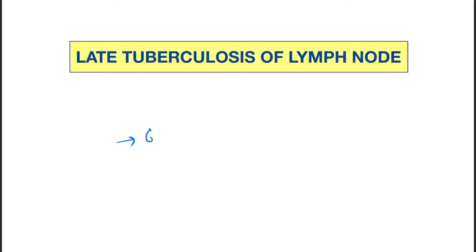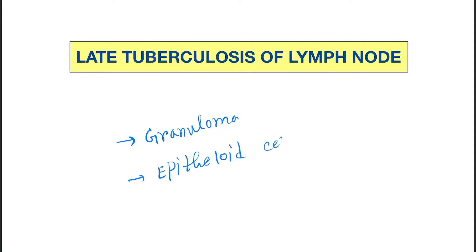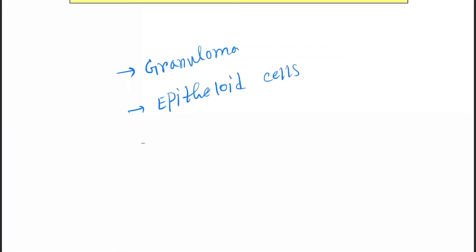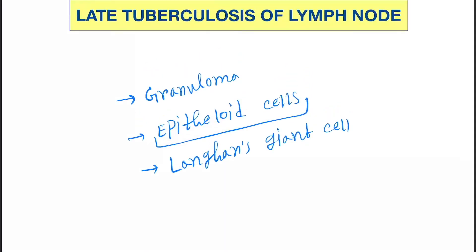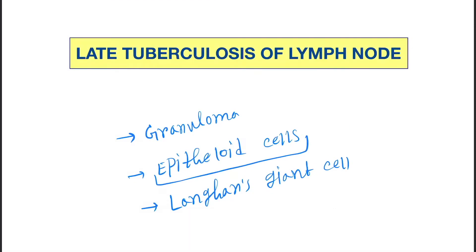In the case of early tuberculosis, there were 3 characteristics: first is the granuloma, next are the epithelioid cells, and multiple epithelioid cells fix together to form the Langhans giant cell.